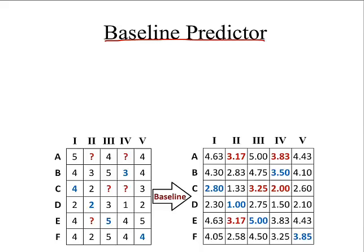And with the baseline predictor, we take that simple average of the whole dataset and we add in the bias of the user and the bias of the movie that he's rating.